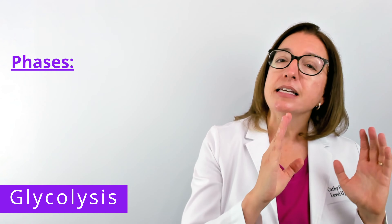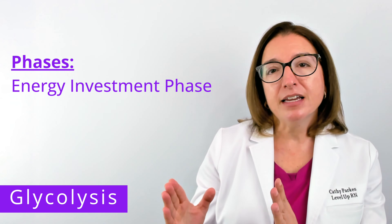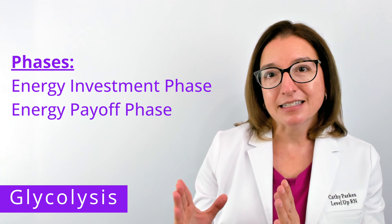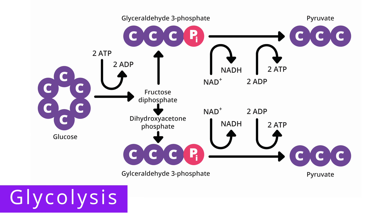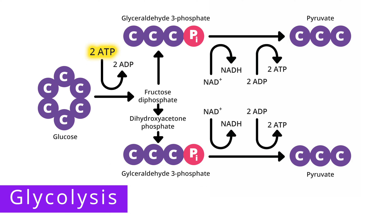Glycolysis is broken down into two phases. The first phase is the energy investment phase and the second phase is the energy payoff phase. During the energy investment phase, glucose is split into two 3-carbon molecules called glyceraldehyde 3-phosphate, or G3P. The energy used to split glucose into these two G3P molecules comes from two ATP molecules.